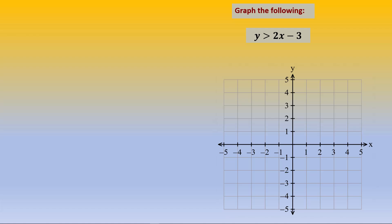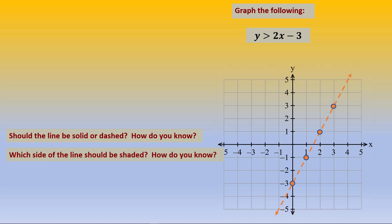Let's try this one. To graph it, we locate the y-intercept at negative 3 according to the inequality, and then work up 2 and over 1 a few times, and finally draw the line. Should it be solid or dashed? Because it is greater than and does not include the equal sign, it is a dashed line. Which side of the line should be shaded? It should be shaded above because of the greater than symbol.